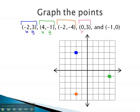Next is (0, 3). x is 0, y is 3. This means there's no left or right motion, just 3 to the north or 3 up.